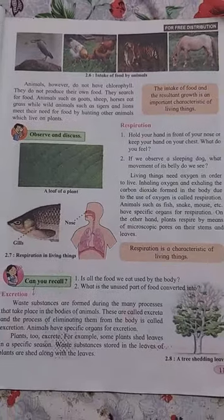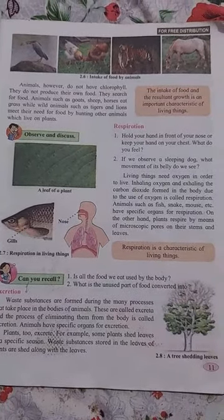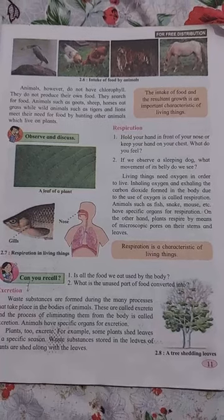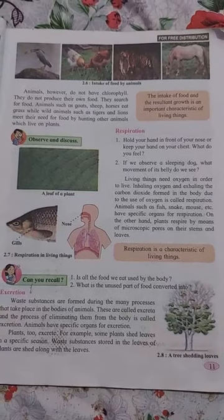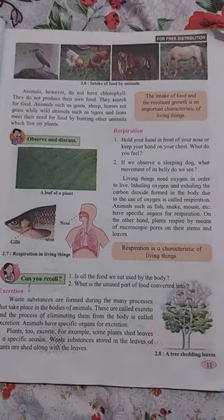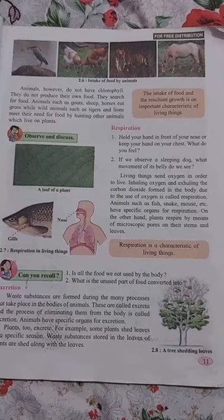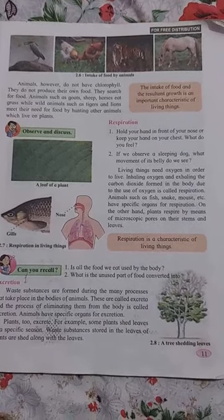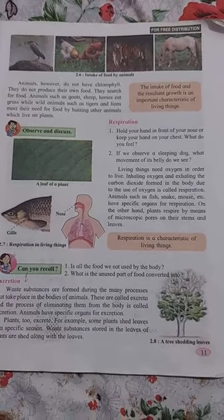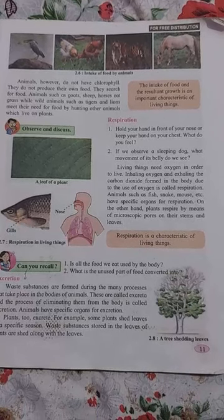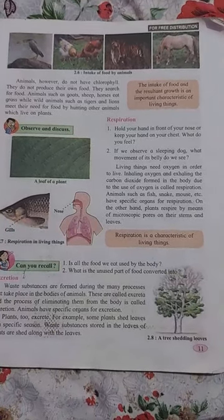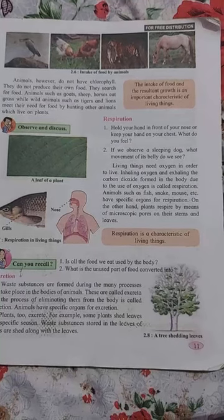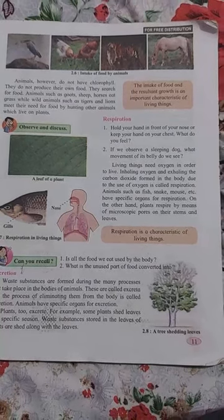Animals, however, do not have chlorophyll. They do not produce their own food — they search for food. Animals such as goats, sheep, horses, cats, and wild animals such as tigers and lions meet their need for food by hunting other animals which live on plants. The intake of food and the resultant growth is an important characteristic of living things.